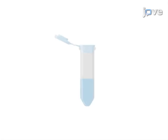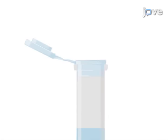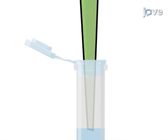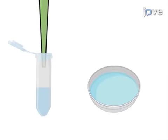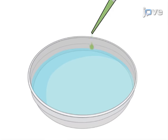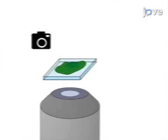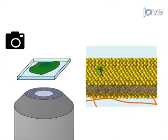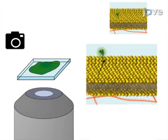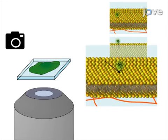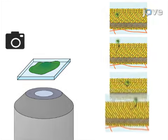Next, liposome based vectors including a fluorescently tagged molecule of interest are prepared and introduced into live cells either by transfection or direct incorporation. Fast imaging of the live cell plasma membrane is performed by total internal reflection fluorescence microscopy.